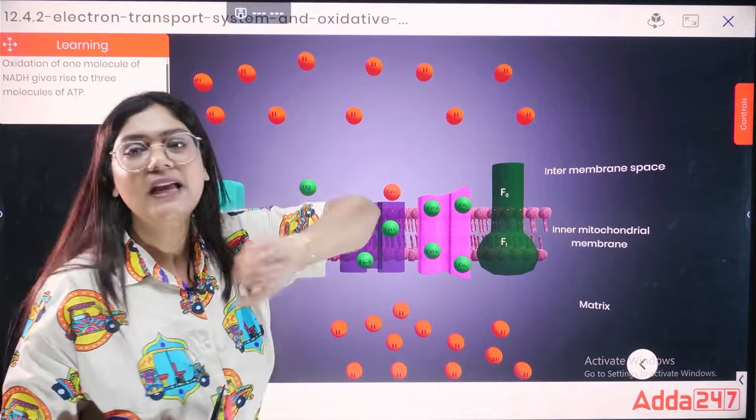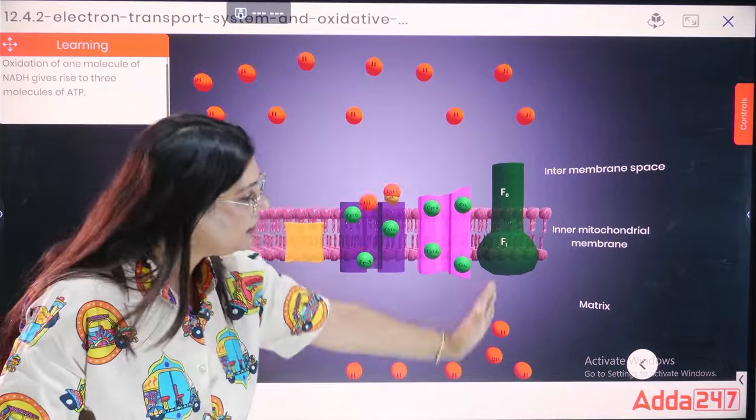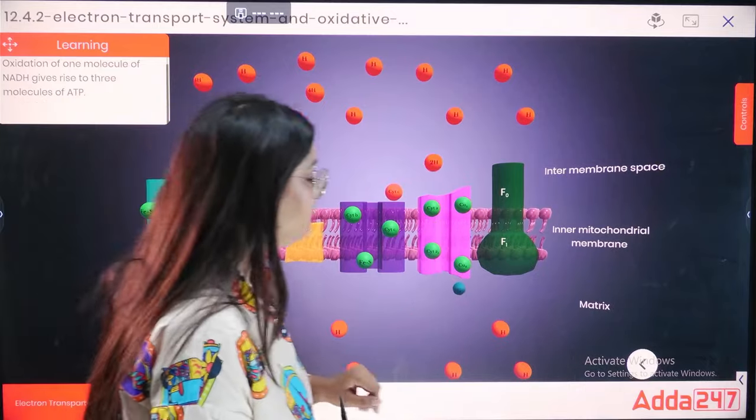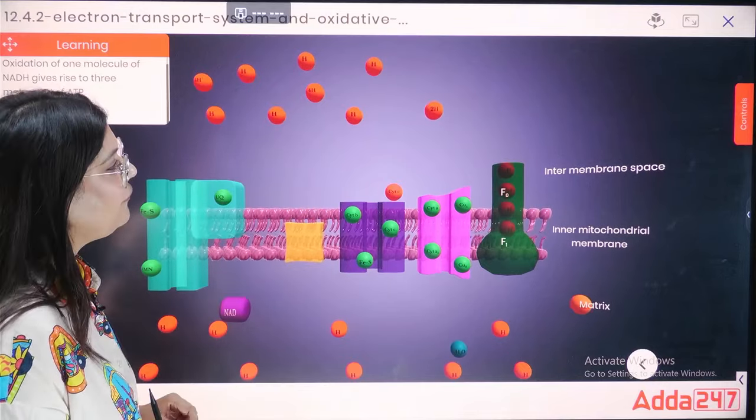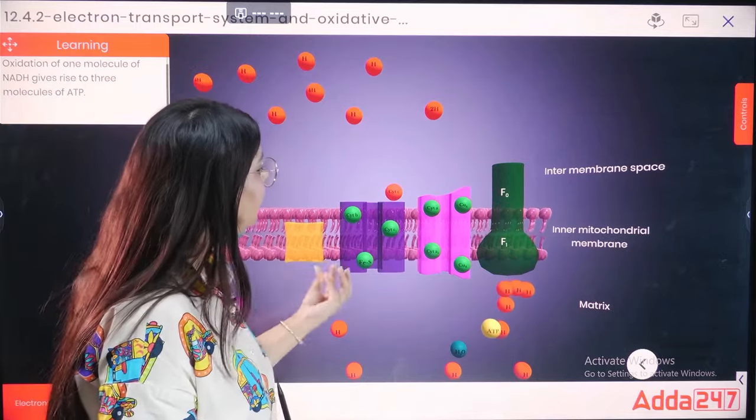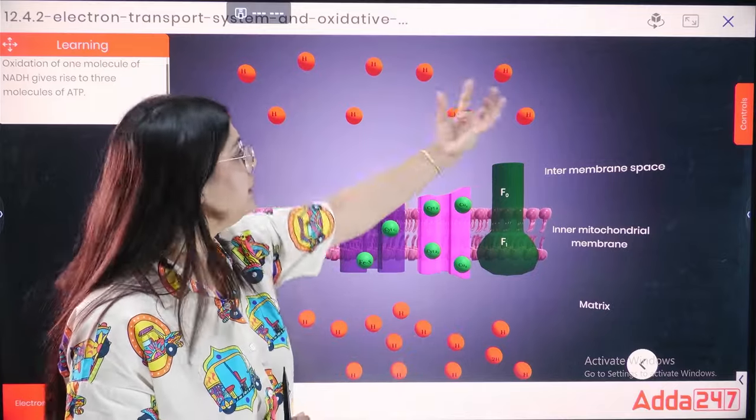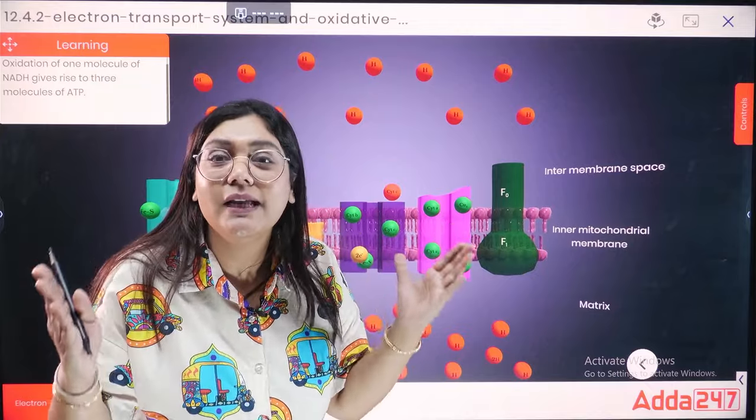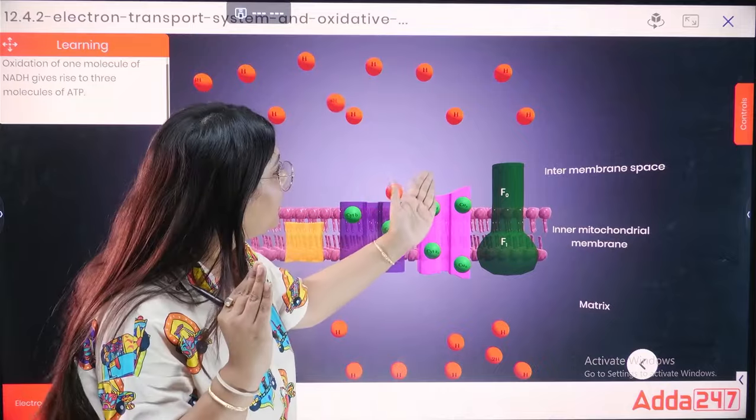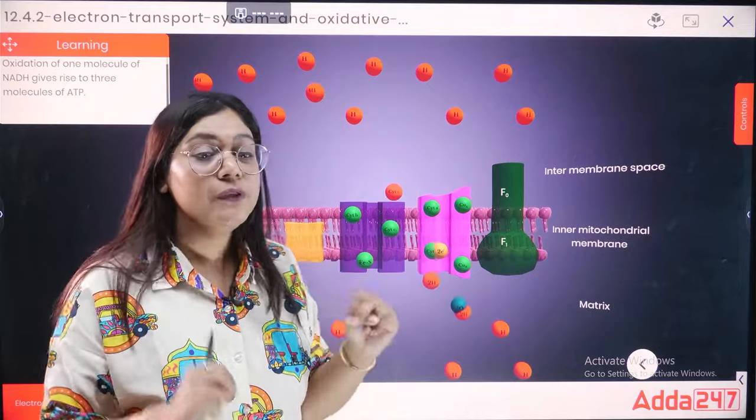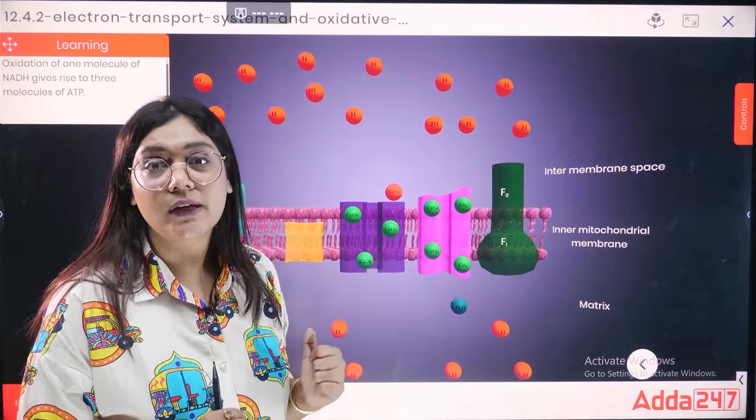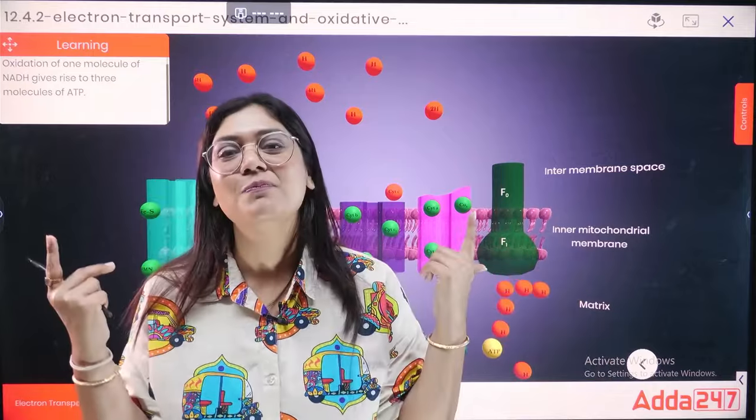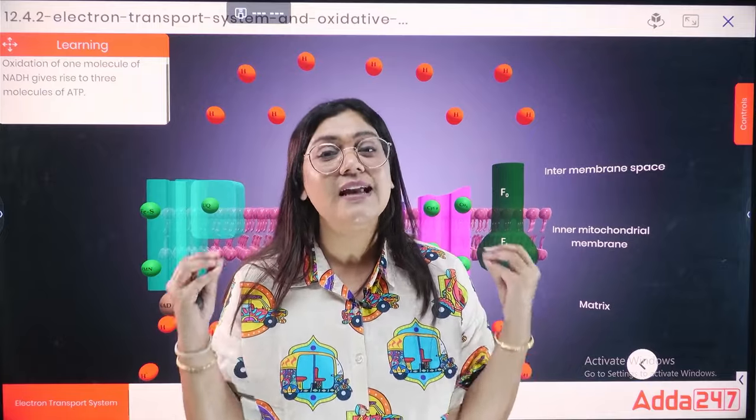If we can see that, we can see that there are 10 H plus molecules. Here you can see that there are 10 H plus molecules. So, what is the electron gradient? Why do you go inside the proton gradient? Calculated and derived in the form of ATP.